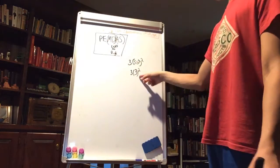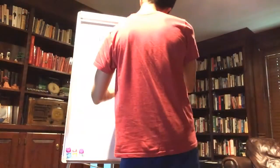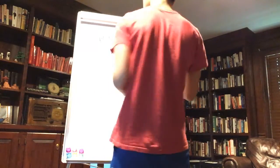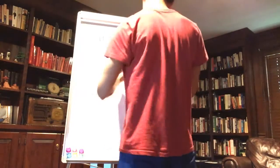Then exponents. This is E, and you have an exponent here. 3 squared is 9. And 3 times 9 multiplication, 27.